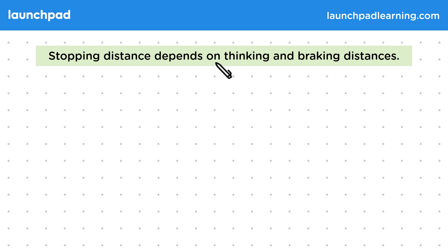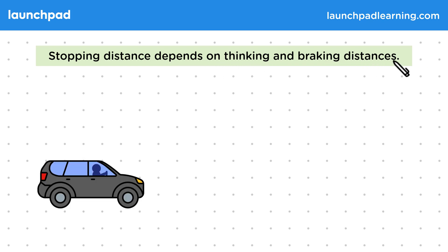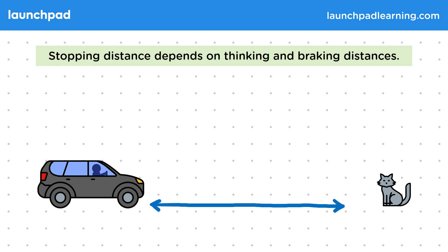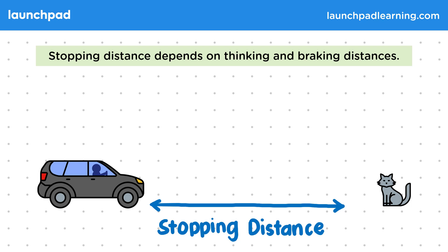Stopping distance depends on thinking and braking distances. Remember that if a driver sees something that causes them to suddenly stop, such as a cat running into the road, then the stopping distance is the distance travelled between this danger appearing and the car actually stopping.